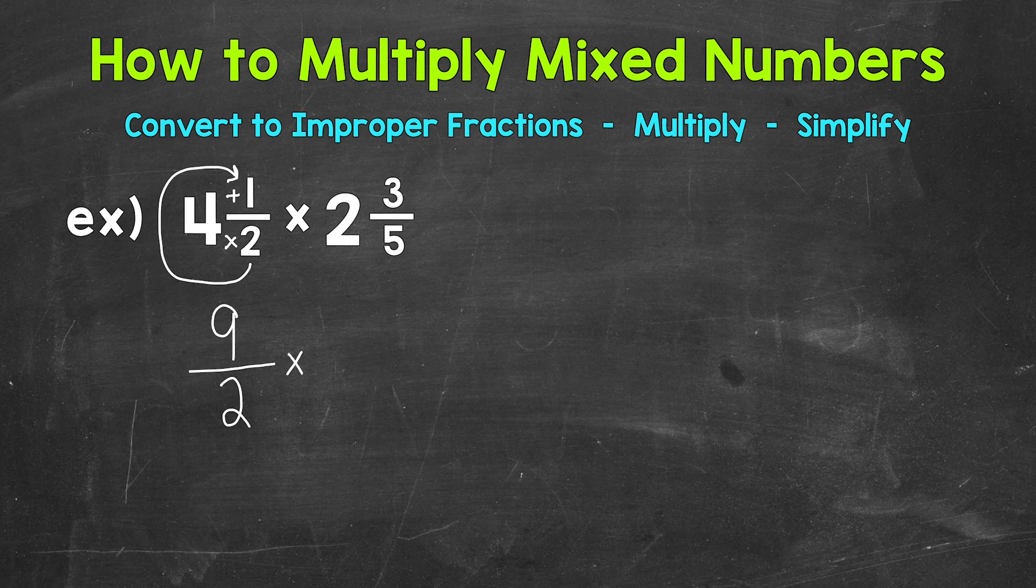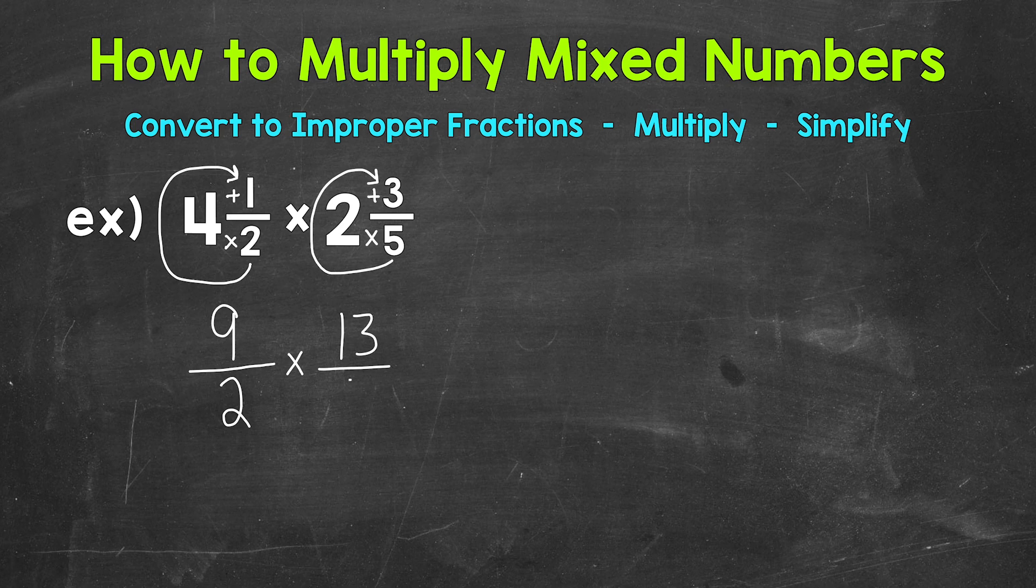Let's bring our multiplication sign down and then convert our other mixed number. So we multiply, then add. So five times two is 10 plus three gives us 13. That's our numerator. And then keep our denominator of five the same.